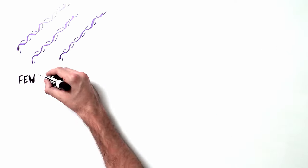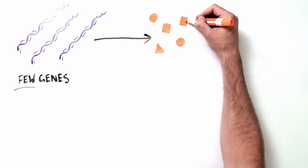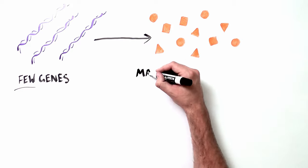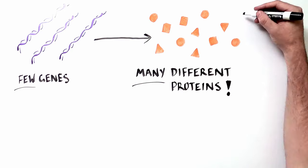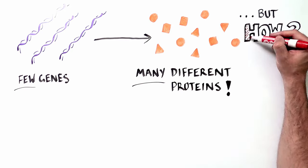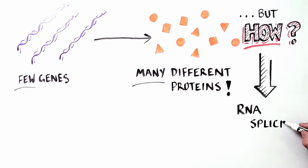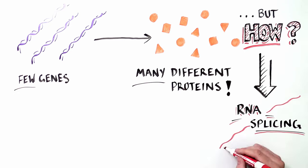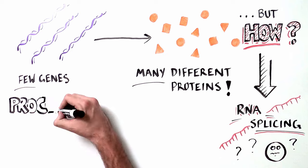How is it that such a small number of genes can provide directions for making at least 12 times as many different proteins? The answer lies in a very clever mechanism that nature has evolved called RNA splicing.